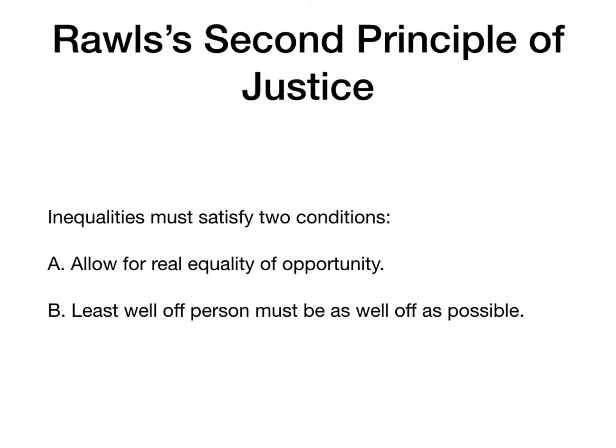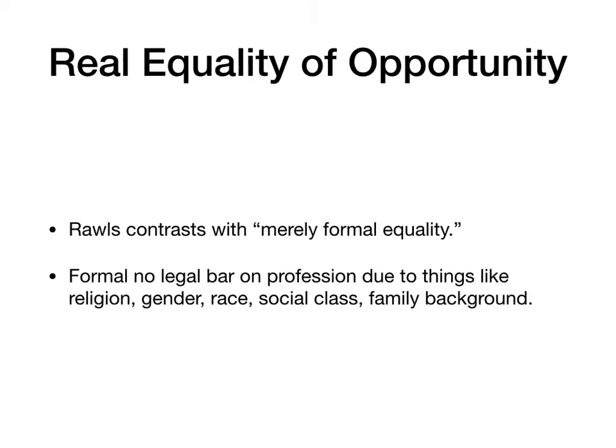Let's start by talking about real equality of opportunity. Rawls contrasts real equality of opportunity with what he calls merely formal equality of opportunity. If society has formal equality of opportunity, it means there's no legal bar on what professions or roles you can occupy in society because of religion, gender, race, social class, or family background.